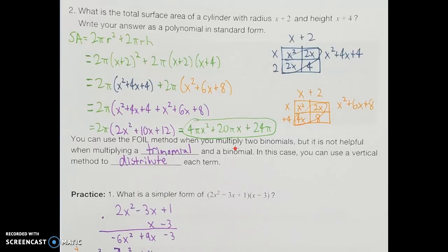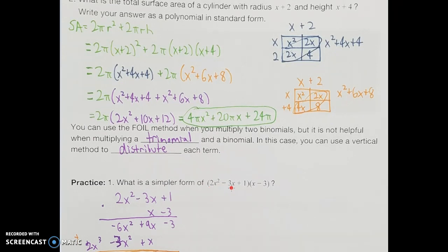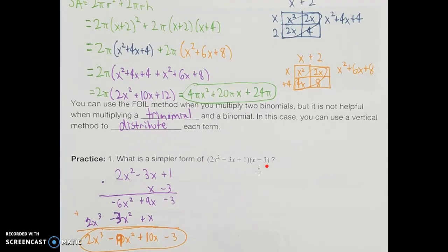You can also use the FOIL method when multiplying two binomials, but it's not helpful when taking a trinomial and a binomial. A trinomial has three terms. In this case, we can use the vertical method to distribute each term, similar to multi-digit multiplication from elementary school. Taking 2x squared minus 3x plus 1 as the trinomial and x minus 3 as the binomial, writing that vertically with the trinomial first and binomial second: negative 3 times 1 is negative 3, negative 3 times negative 3x is 9x, and negative 3 times 2x squared is negative 6x squared.